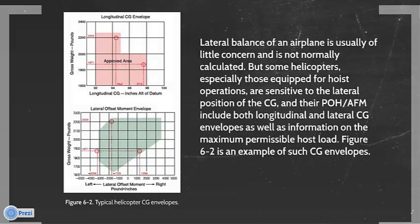Lateral balance of an airplane is usually of little concern and is not normally calculated. But some helicopters, especially those equipped for hoist operations, are sensitive to the lateral position of the CG, and their POH or AFM include both longitudinal and lateral CG envelopes as well as information on the maximum permissible hoist load. Figure 6-2 is an example of such CG envelopes.